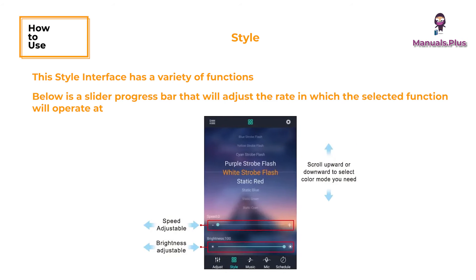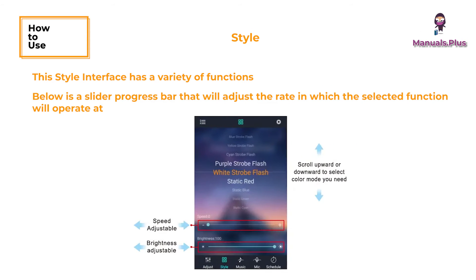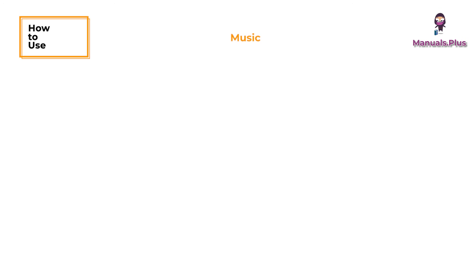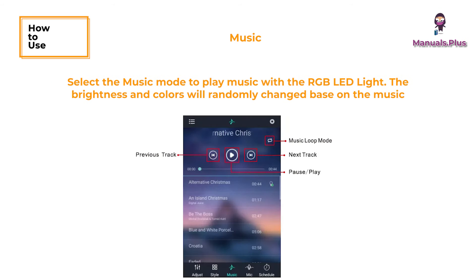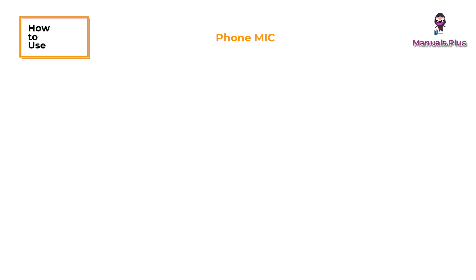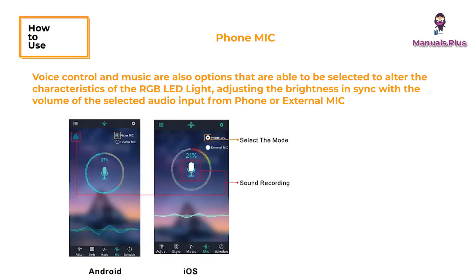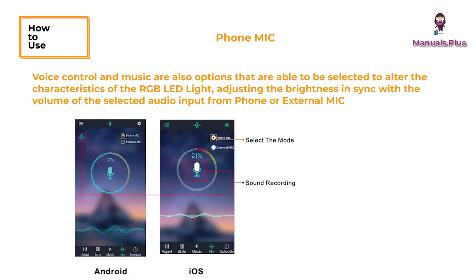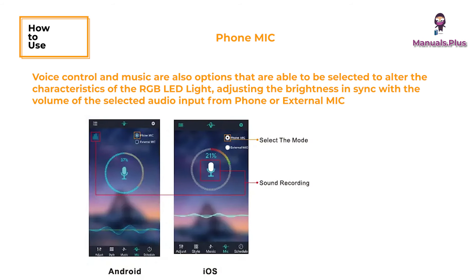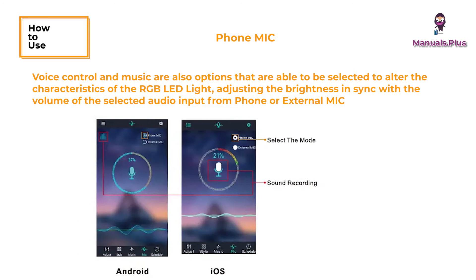In the Style interface, there is a slider progress bar that adjusts the rate at which the selected function operates. Select the Music mode to play music with the RGB LED light — the brightness and colors will randomly change based on the music. Phone mic, voice control, and music are also options that can be selected to alter the characteristics of the RGB LED light.